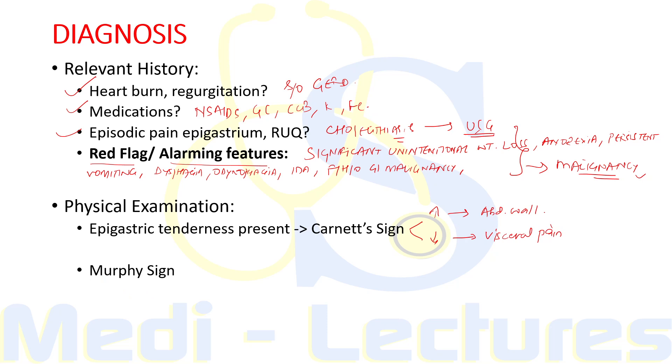Similarly, we can ask the patient to perform Murphy's sign. In case of acute cholecystitis, localized tenderness can be present in the right hypochondrium. In liver abscess and in other conditions, tenderness is present in other areas according to the organ involved.